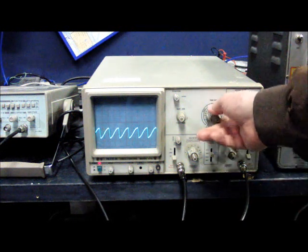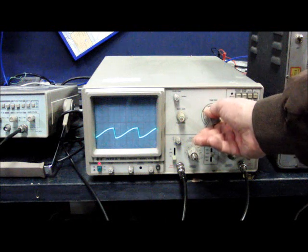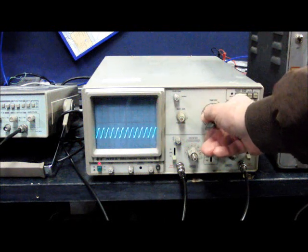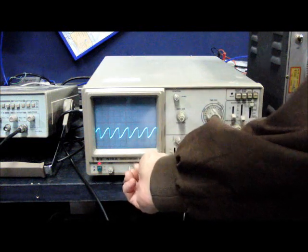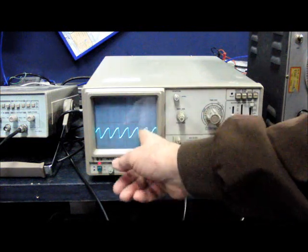The time divider has its range of settings, and these lines on the screen here represent time and voltage.